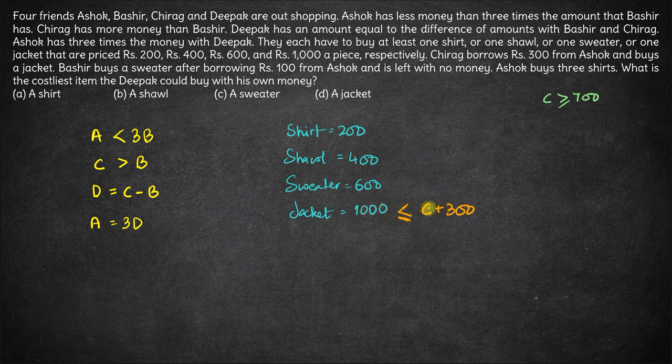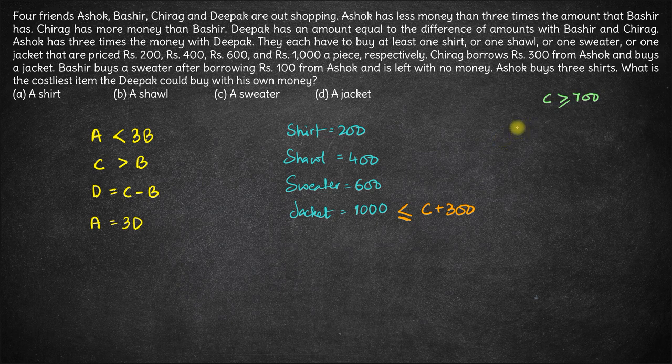That gives us that C is greater than or equal to 700. The amount of money left with Ashok will now be A minus 300.